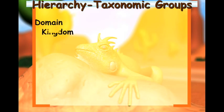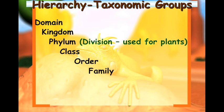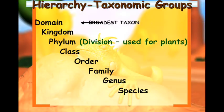Domain is our broadest, then we go to kingdom. Kingdom is broken down into phylum, phylum into class, class into order, order into family, family into genus, and then finally species. We have three domains and six kingdoms. So we're going from a very large category to a very small, very specific one — talking about one species.